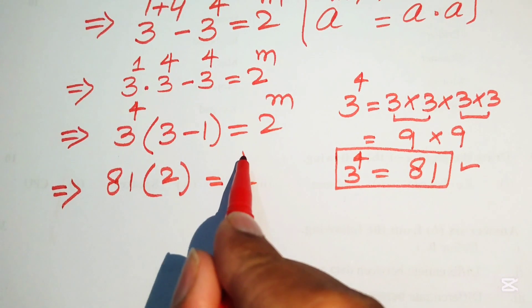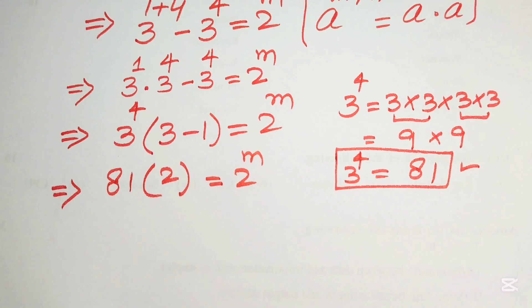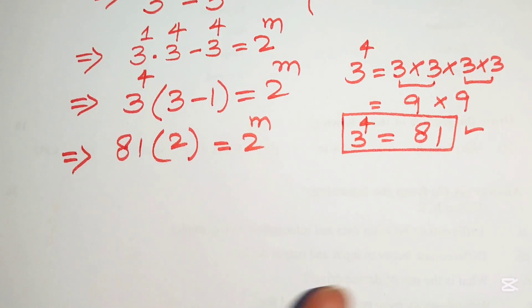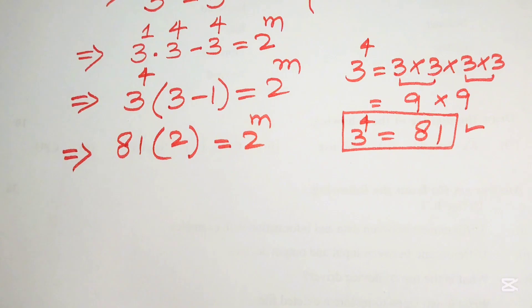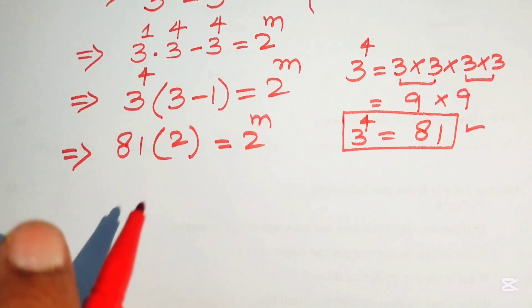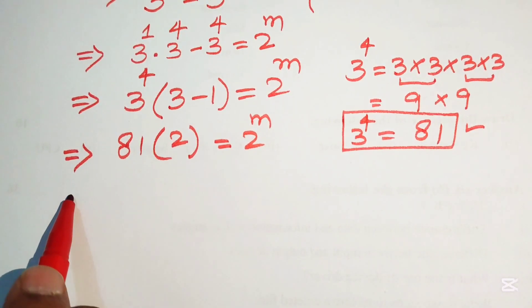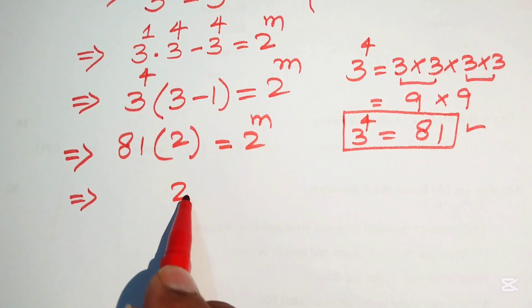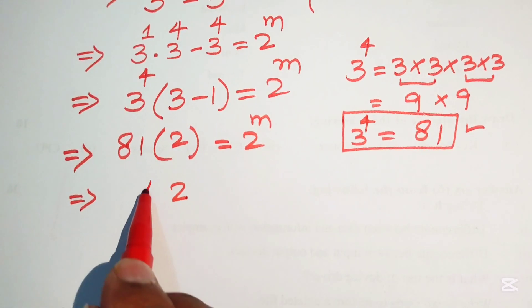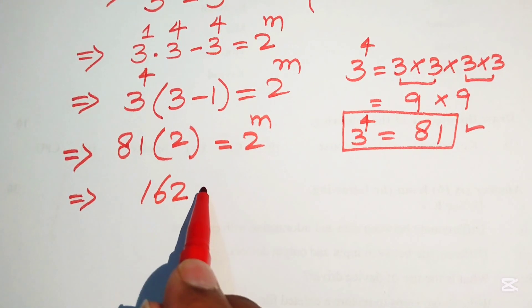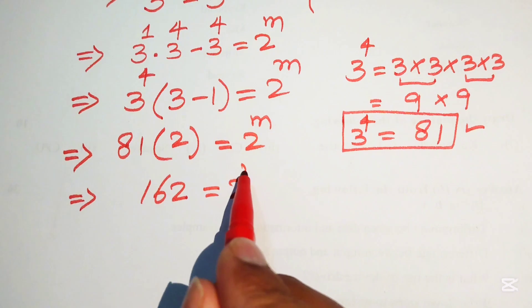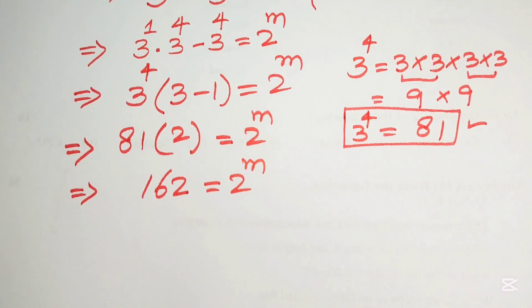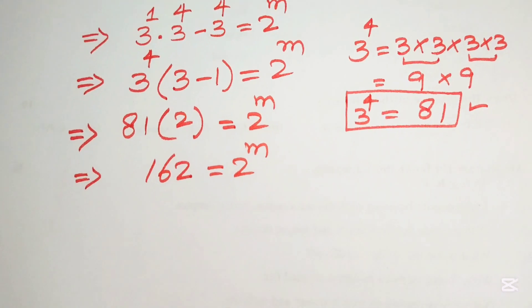Multiplying 81 by 2 — since 3 minus 1 equals 2 — we get 162 equals 2^m. Now, in order to find the value of m, we need to take the logarithm on both sides.